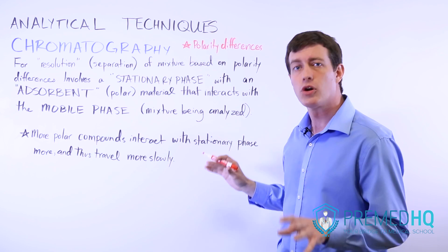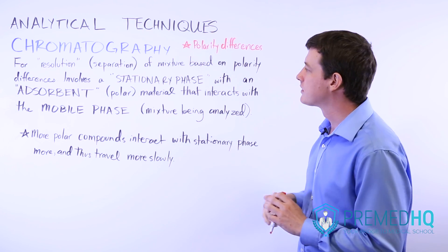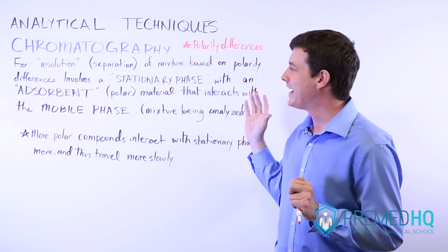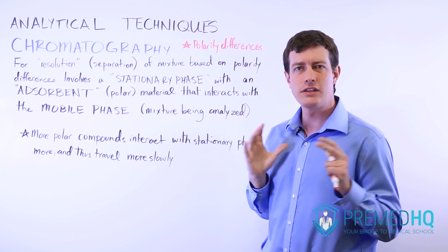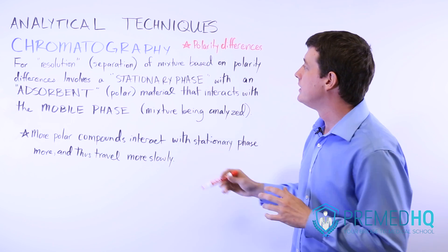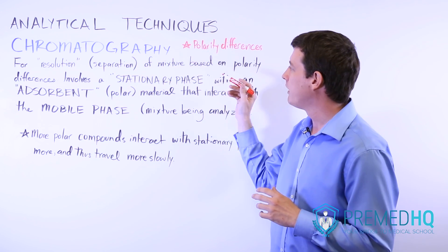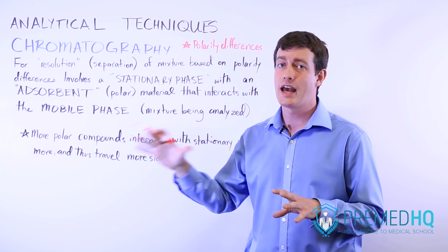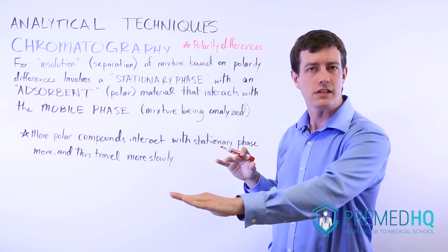All types of chromatography involve what's called a stationary phase, which has an adsorbent material. Adsorbent is essentially a polar material that other things bond with. You separate this by running a mobile phase, which is usually liquid or maybe gas, over the stationary phase.